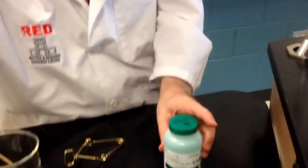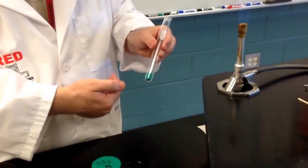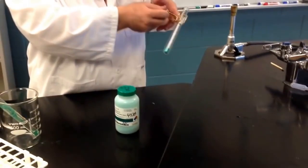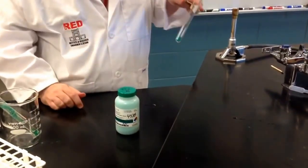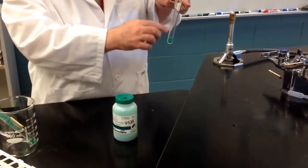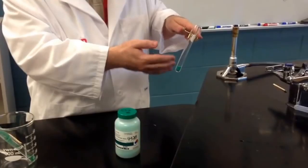We're going to take a test tube with about a scoop full of copper 2 carbonate. We're going to heat it evenly over a blue flame, holding the test tube away from yourself and away from others. And as it heats up, it will begin to bubble, and you'll see the powder bubbling a little bit.